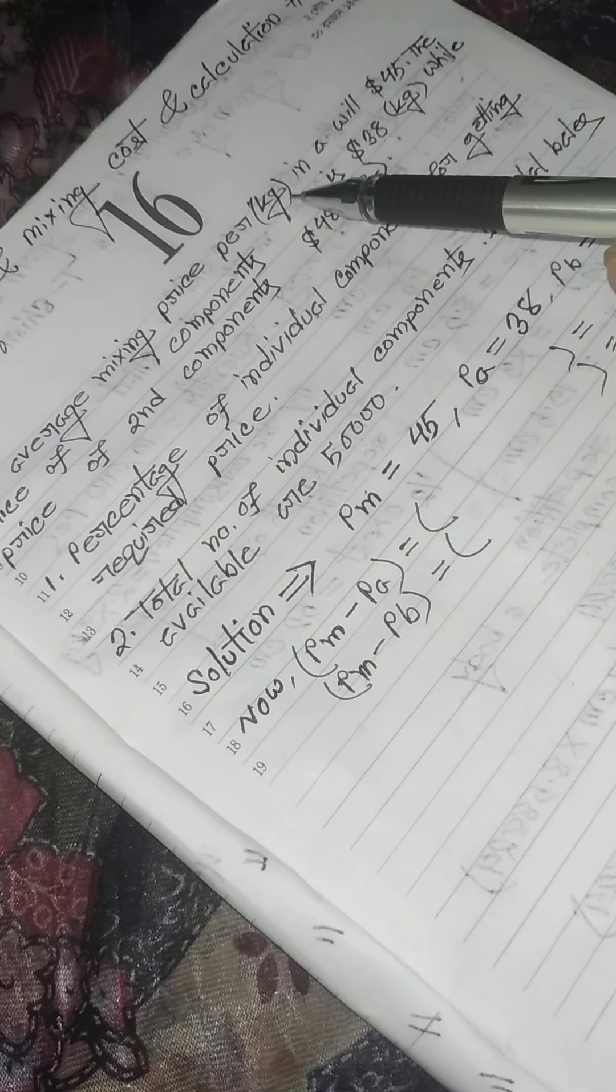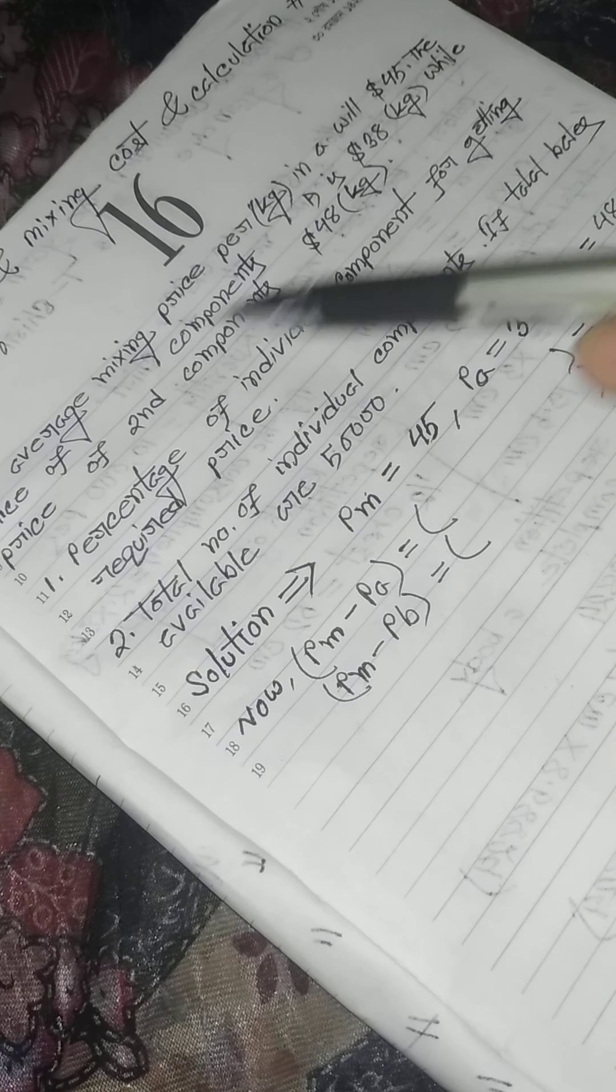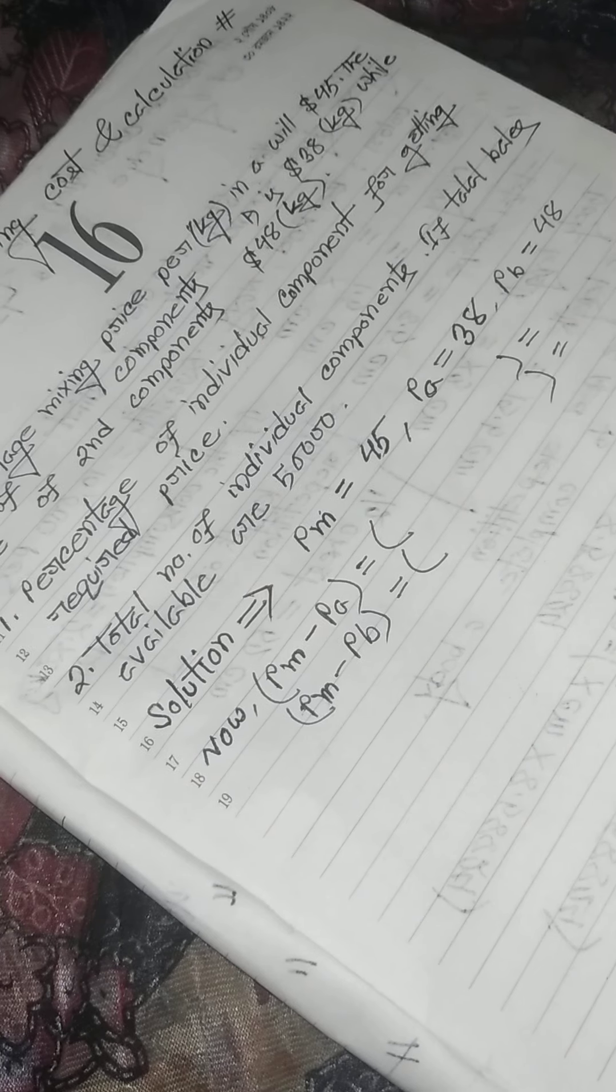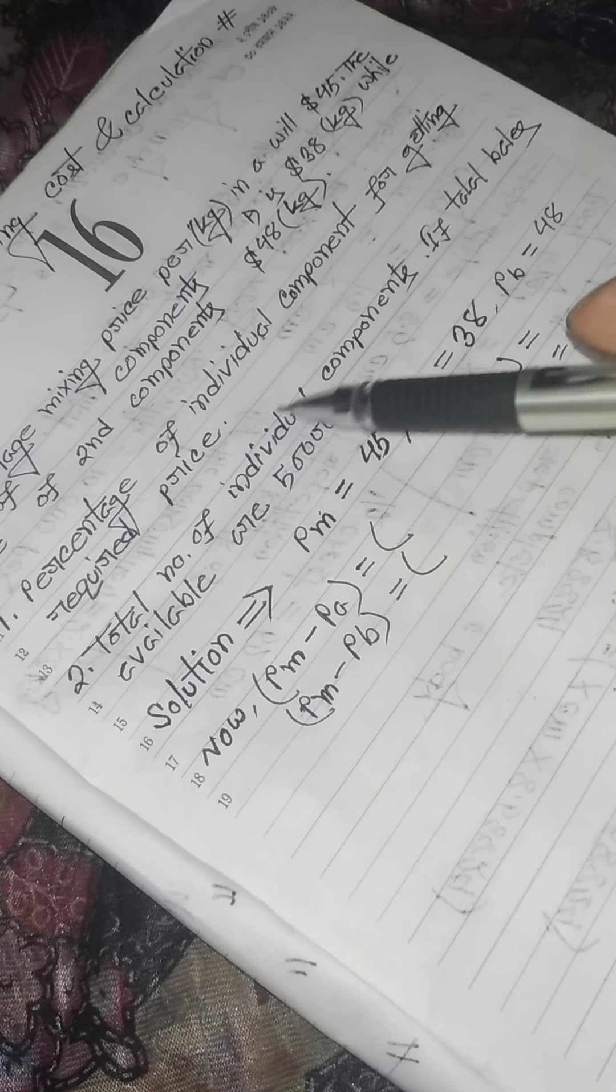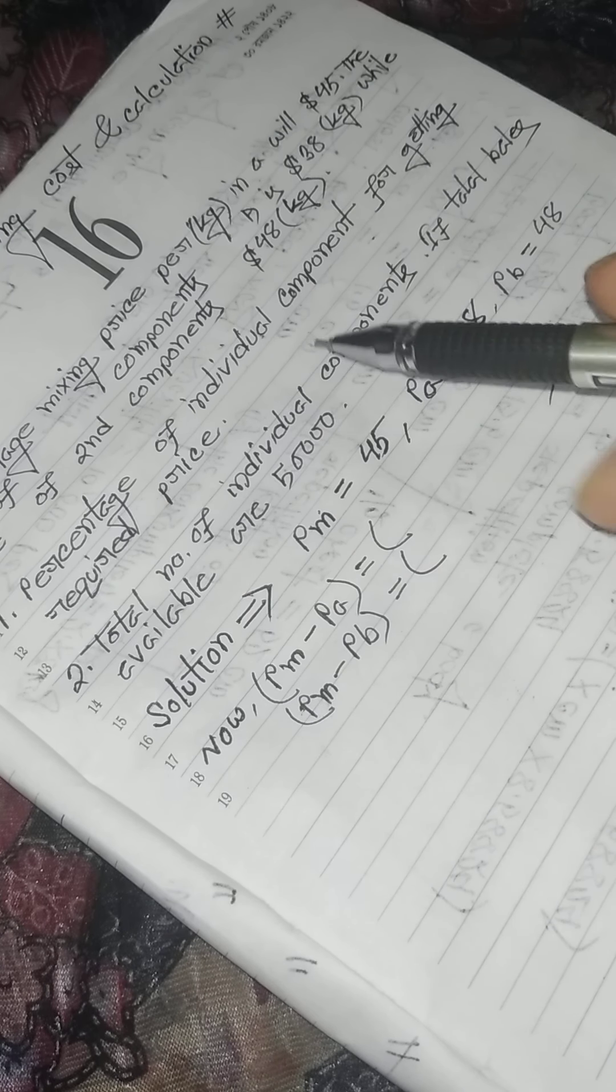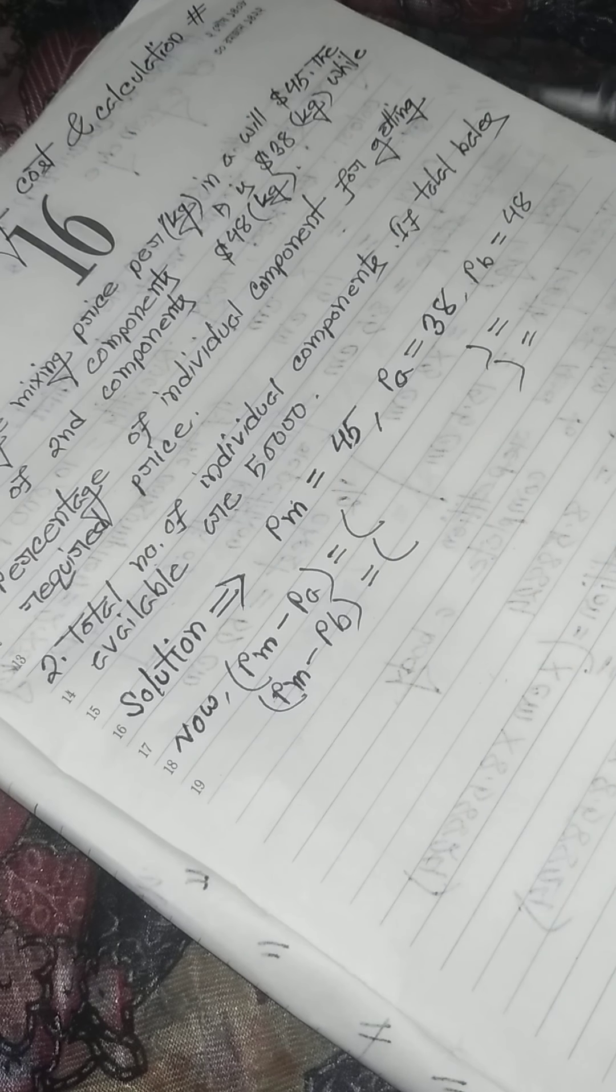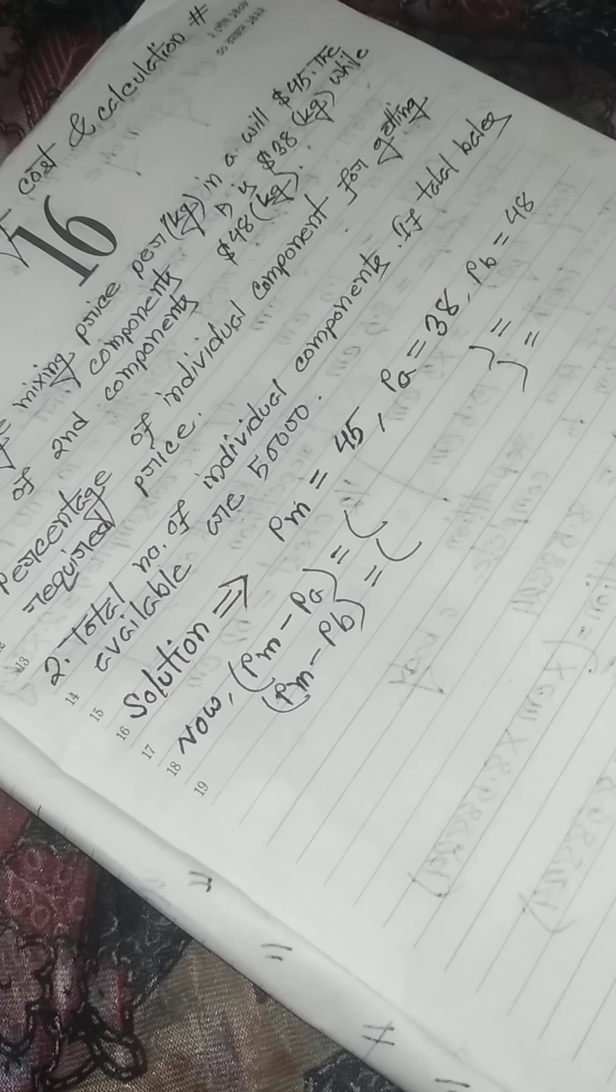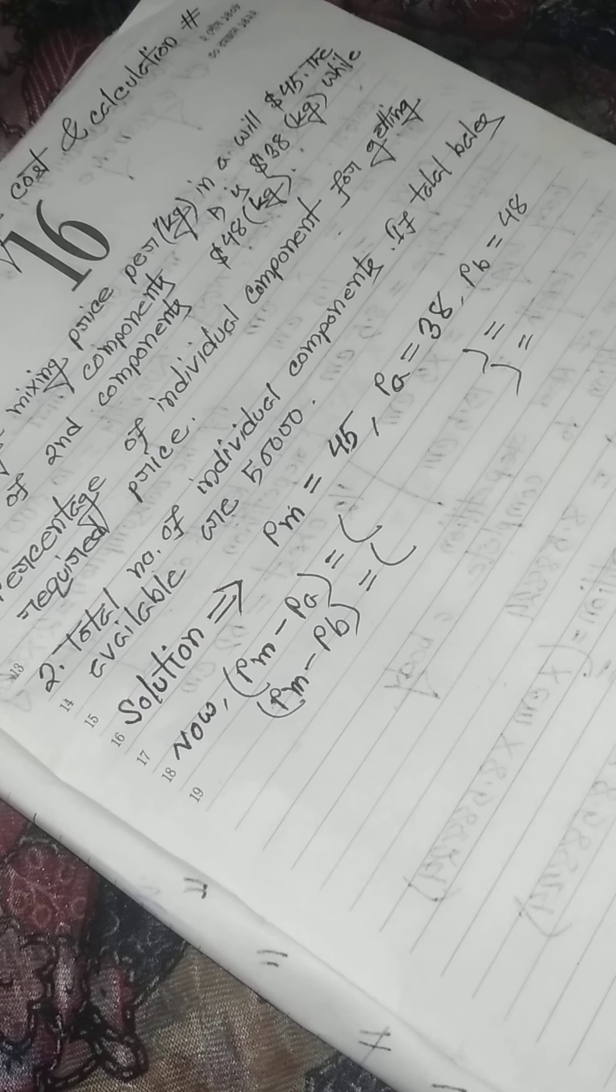The price is $45. The component is $30. The percentage of individual component for getting recurrent price. The price is $70. The number of individual component is $50. The total of $50 is $50.